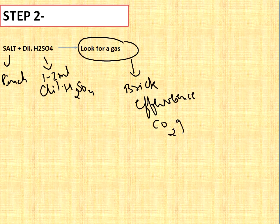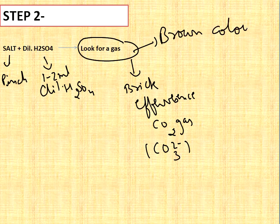If brisk effervescence with CO2 gas, the anion will be carbonate, CO3 2-. Next, if the gas is brown color, the gas will be nitrogen dioxide and the anion is nitrite.